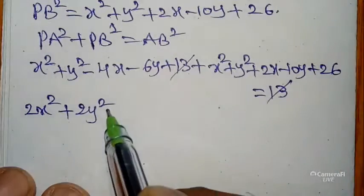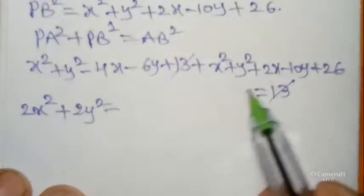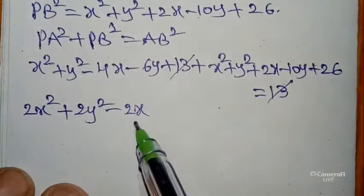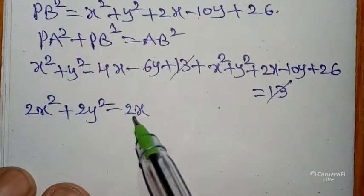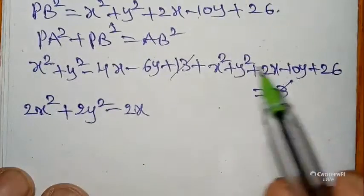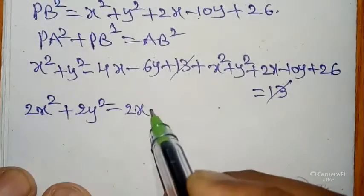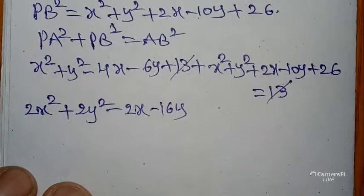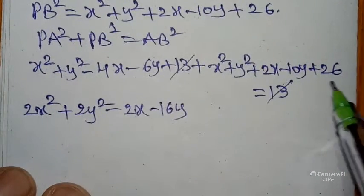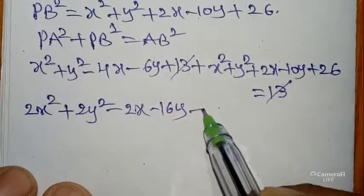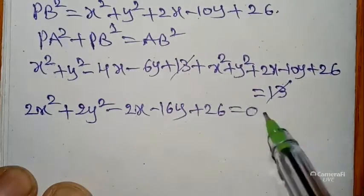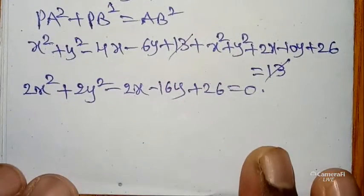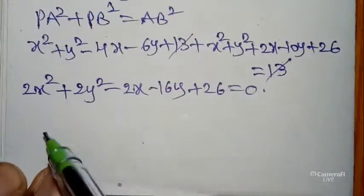Combining like terms: 2x² + 2y² − 2x − 16y + 39 = 13, which gives 2x² + 2y² − 2x − 16y + 26 = 0.